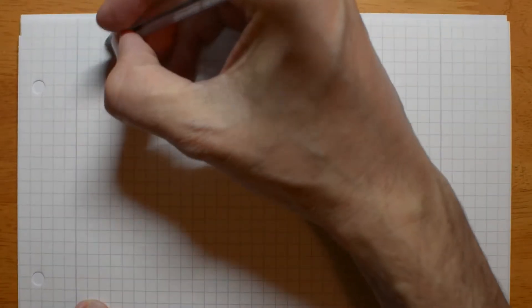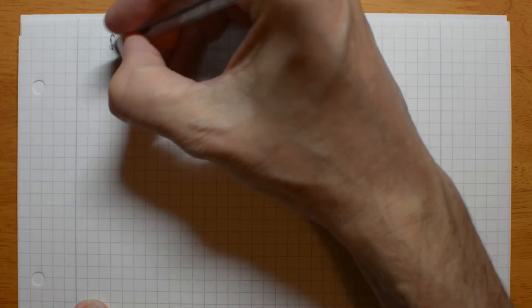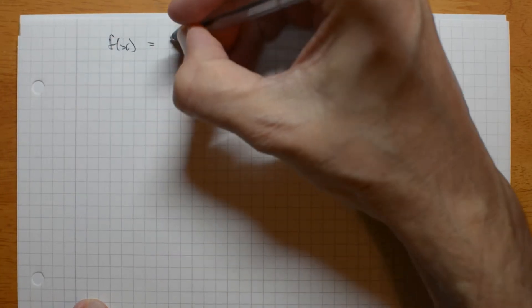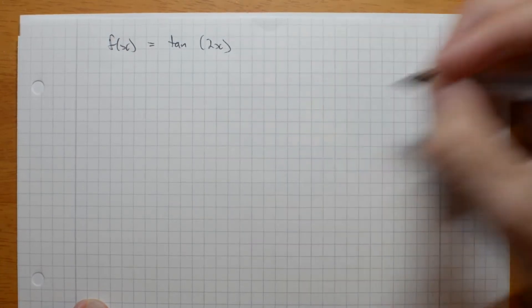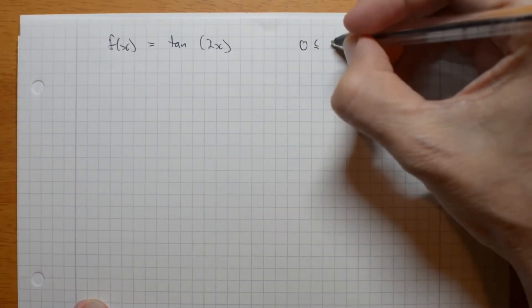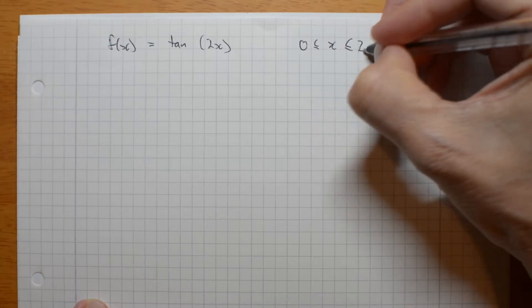Let's try drawing a tan graph. f of x is tan of 2x between 0 and 2 pi, as usual.